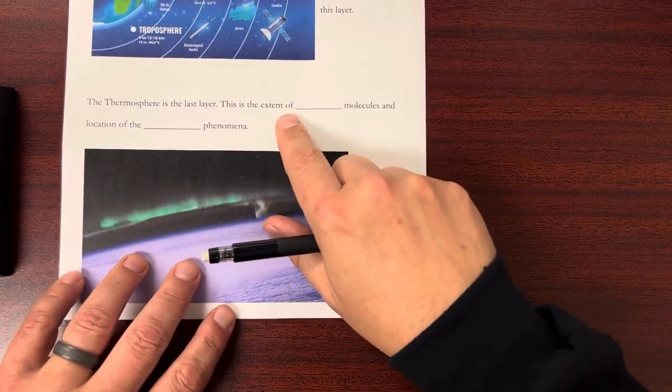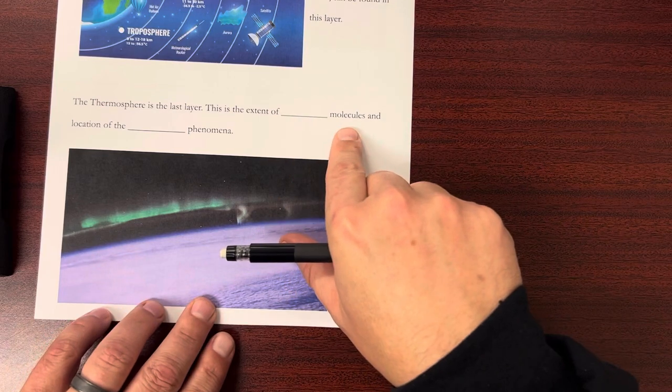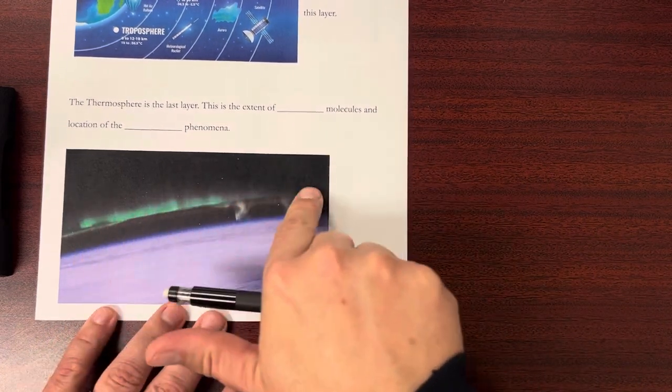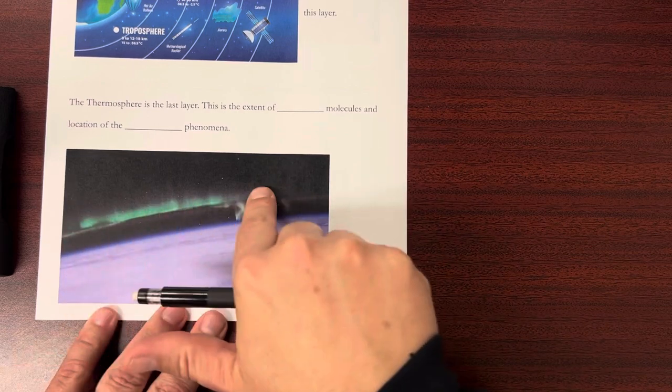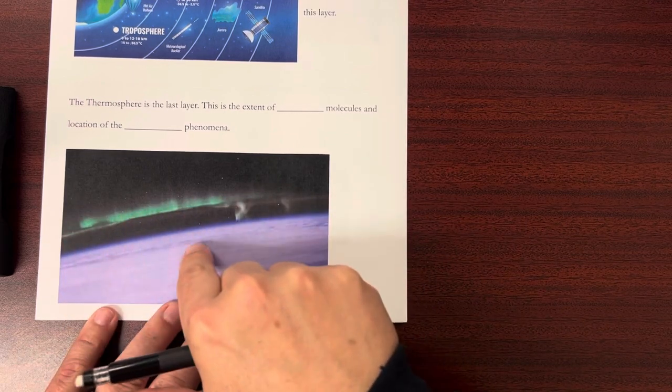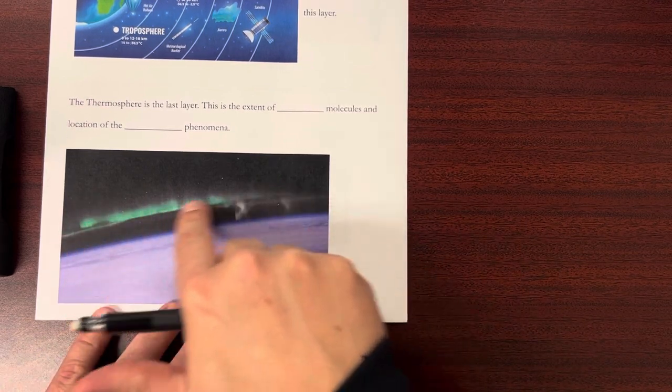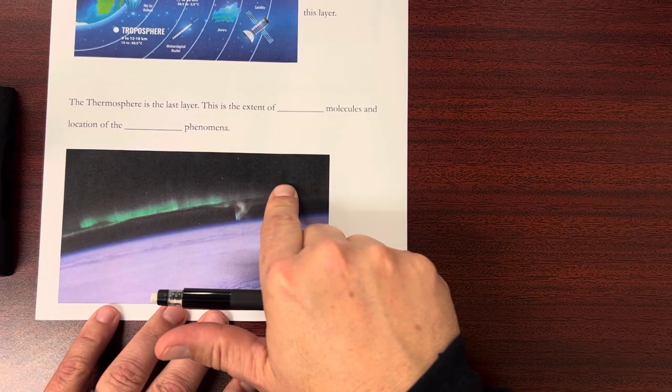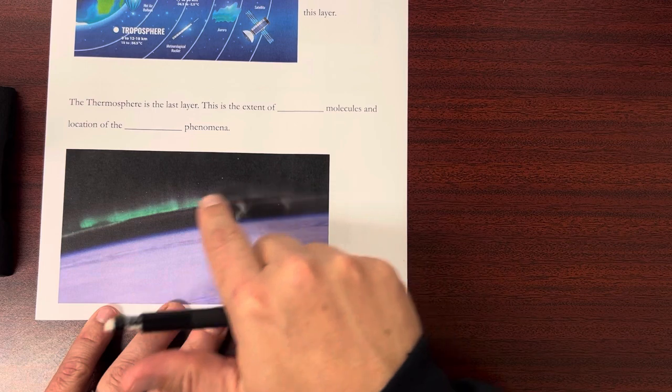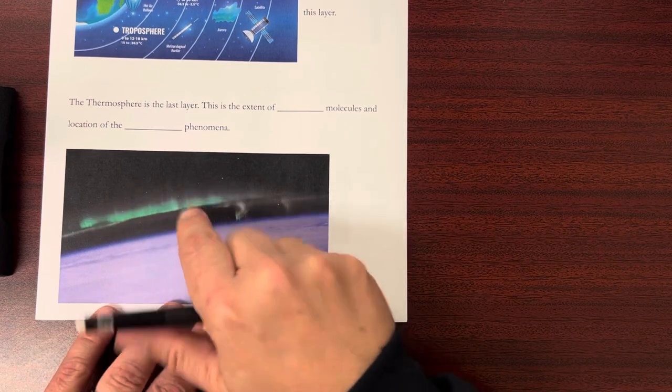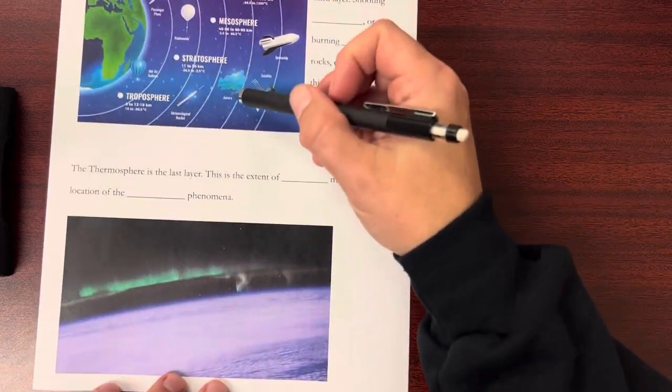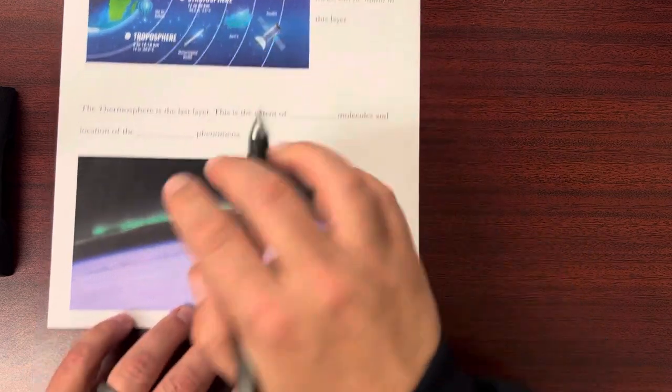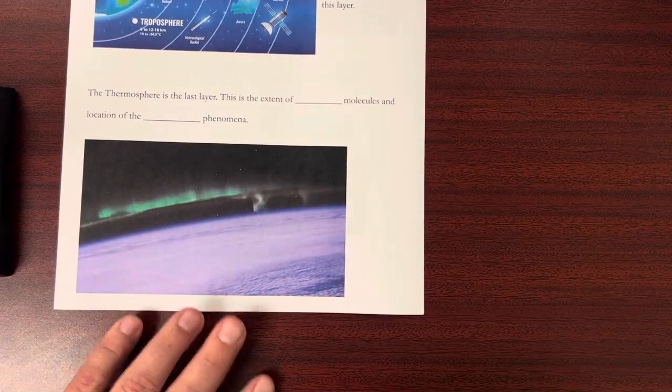This is the aurora phenomena. Usually we see it in different images from the ground, but here you can see it from space, probably from the International Space Station or a satellite. That's where that happens. The aurora is happening in the thermosphere, that lighting up of the gases in that upper layer.